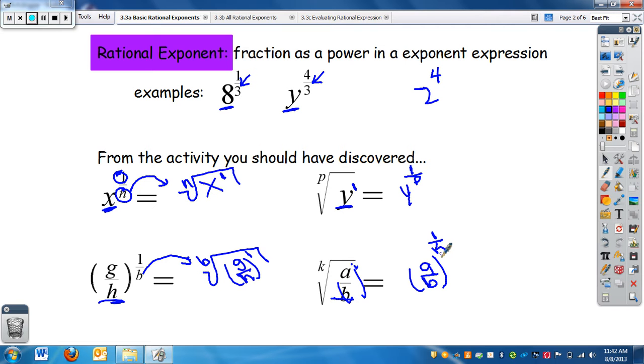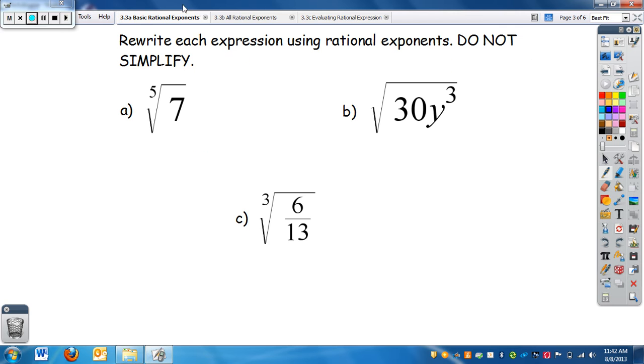We're going to use that to rewrite these expressions. We do not have to simplify. So if I have the fifth root of seven, we can write this as seven to the one-fifth. The index is my denominator and this is my base. Here I have two things under the radicand, so I have a base of 30y³, and then my index is two because it's a square root.